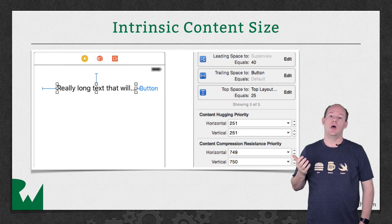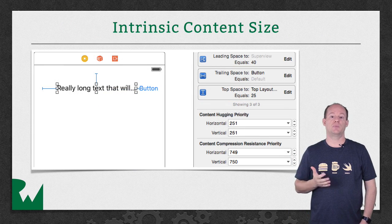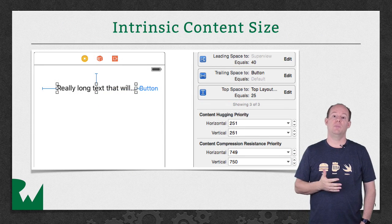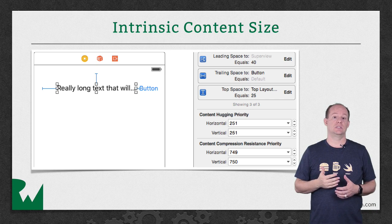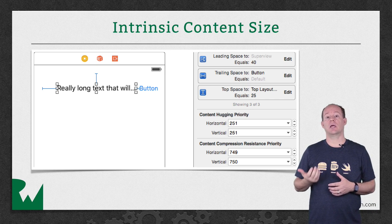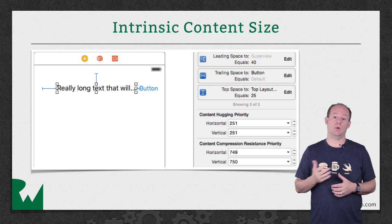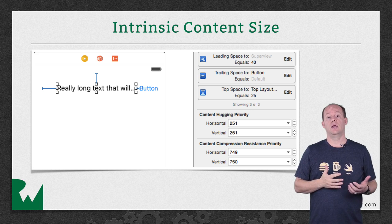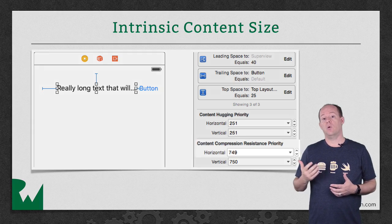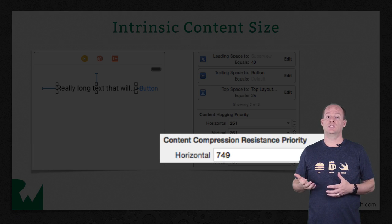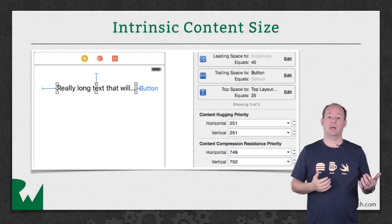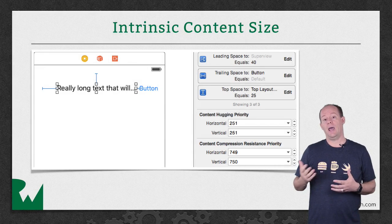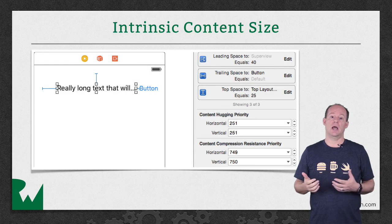Back to our example, the solution is to break the tie between the label and the button horizontal compression resistance. In this case, we would like our label to compress rather than the button. So we set the horizontal compression resistance priority to be lower than the number for the button, and now Auto Layout knows how to break the tie and the errors are gone.